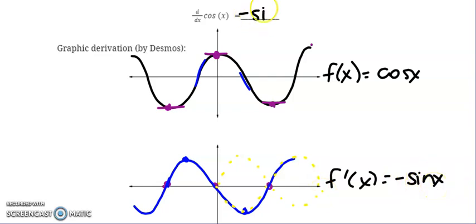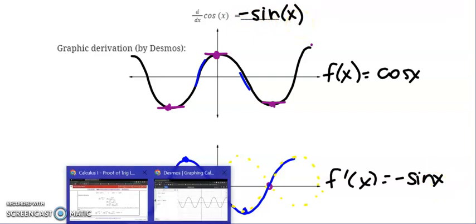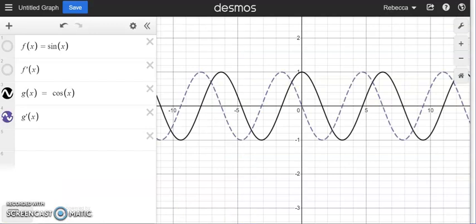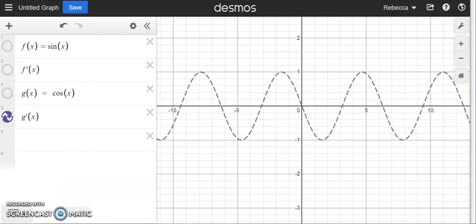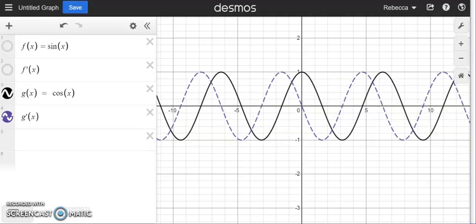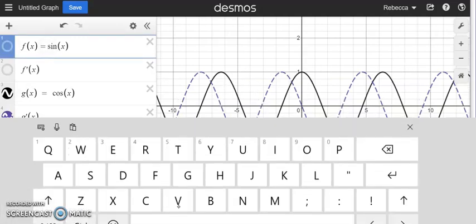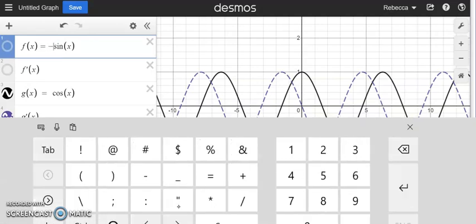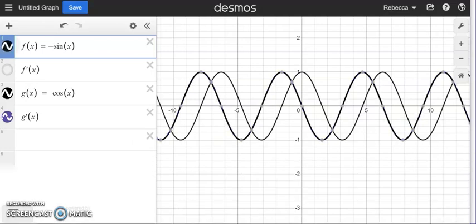So f prime is negative sine of x. The derivative with respect to x of the cosine of x is equal to negative sine x. Let's take a look. There's my g prime. That was my original cosine. When I go to put sine on, see, it's not lining up. What I need it to do is to be the negative sine of x. Now, toggle back and forth between negative sine of x and g prime of x, they represent the same thing.